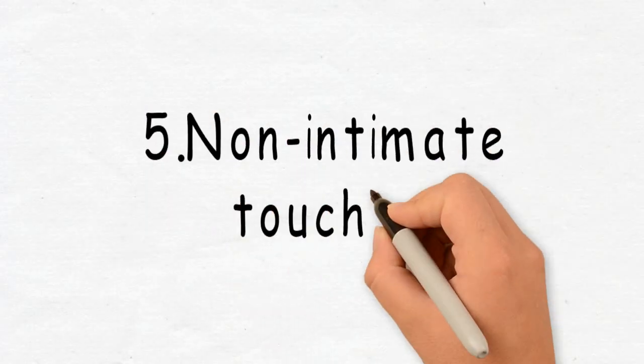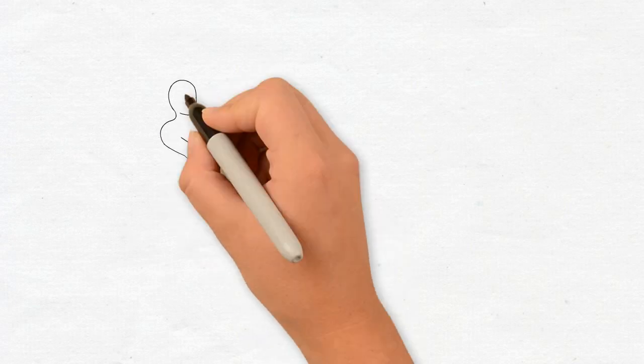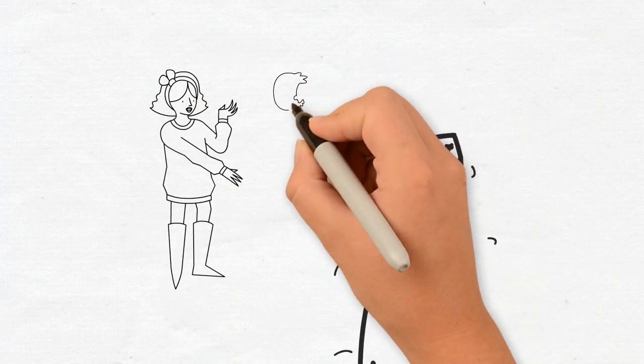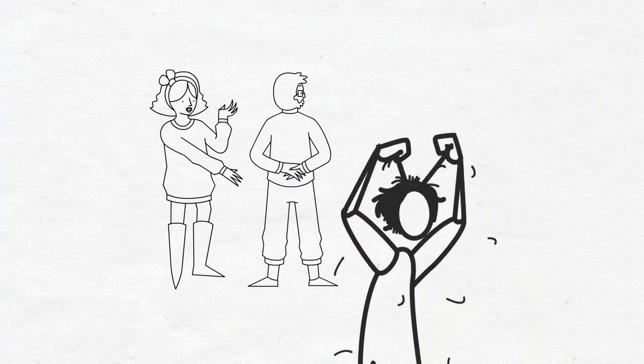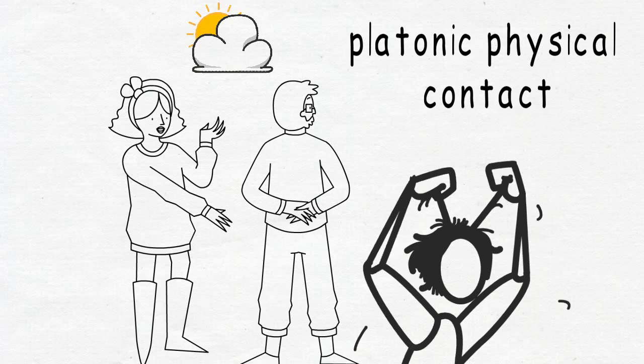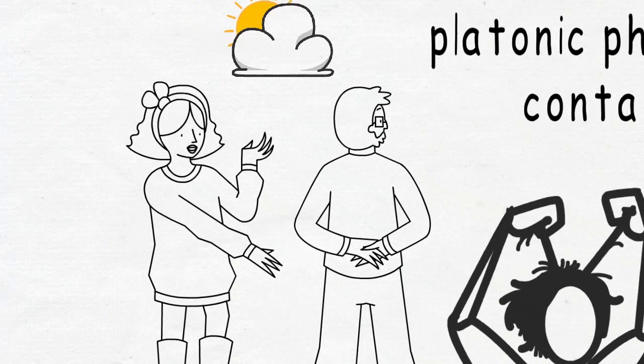Number five. Non-intimate touching. Does she fix your hair when it's pointing the wrong way? Maybe she brushes your shoulder as she walks past you. All these platonic physical contact instances can be a telltale sign that things are going well and she's into you.